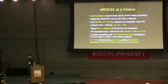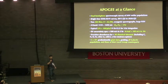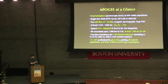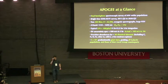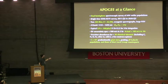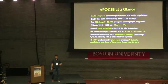APOGEE was conceived with the idea of applying the Sloan philosophy of obtaining massive amounts of spectroscopic data obtained with the same instrument, reduced with the same software, with well-understood systematics and well-calibrated data, applied to detailed analysis. So it's a dual hemisphere spectroscopic survey of Milky Way stellar populations based in infrared H-band.